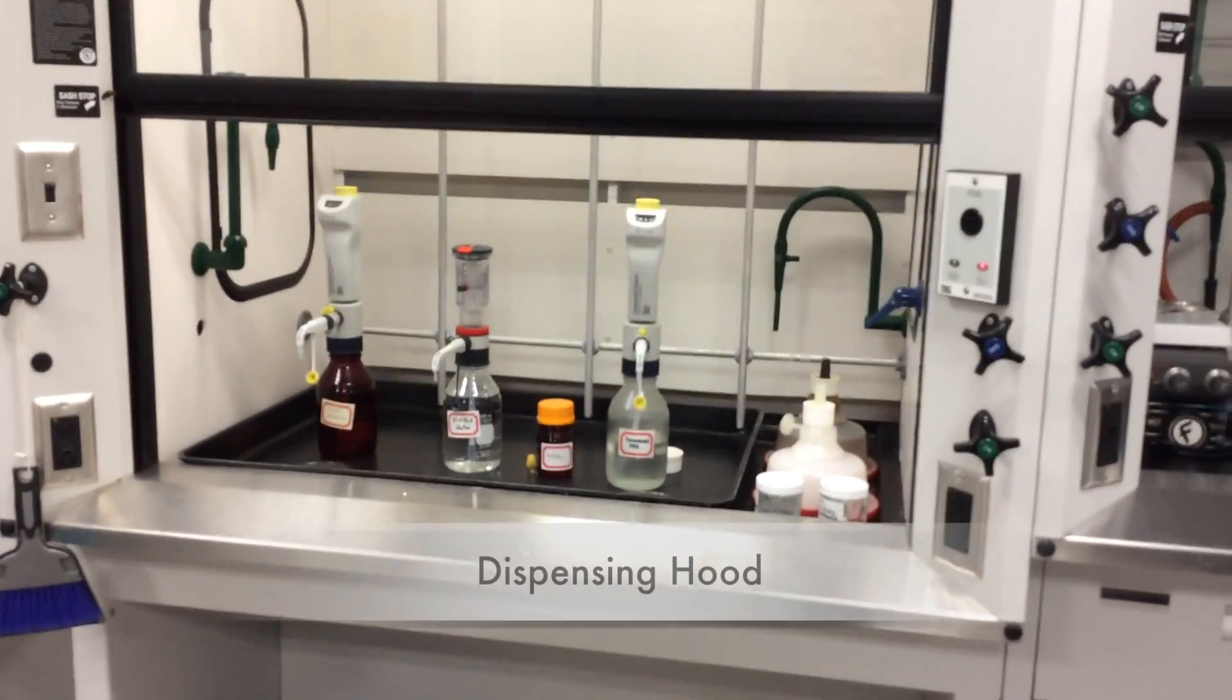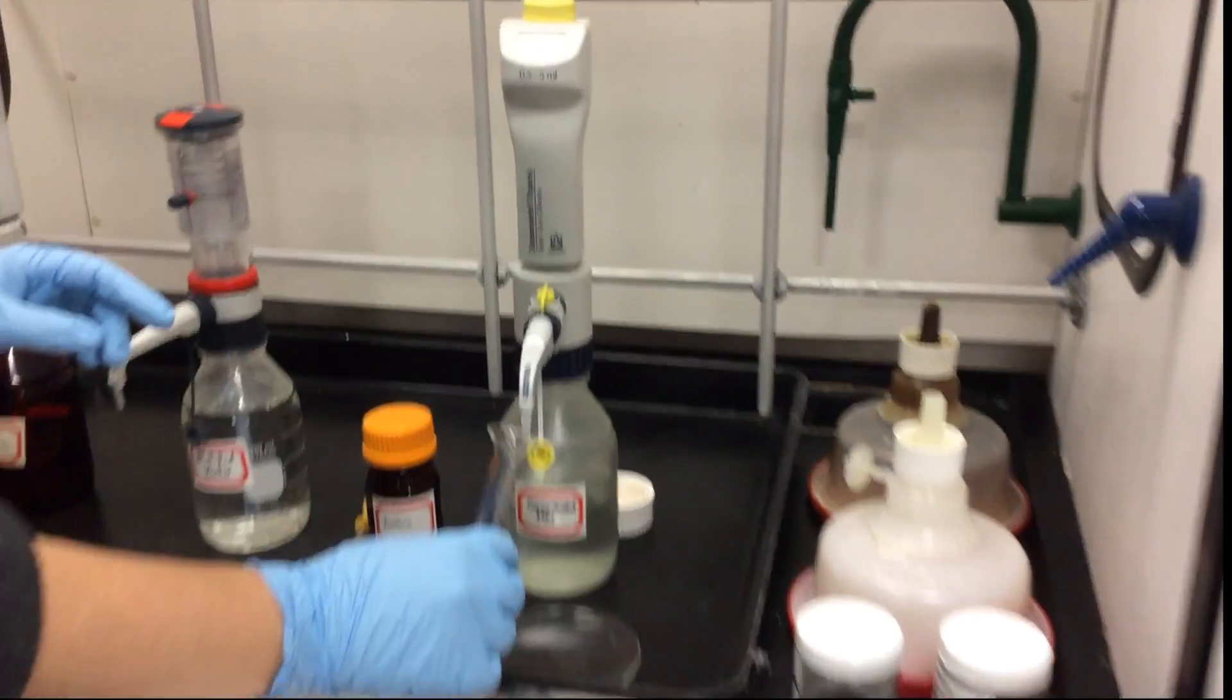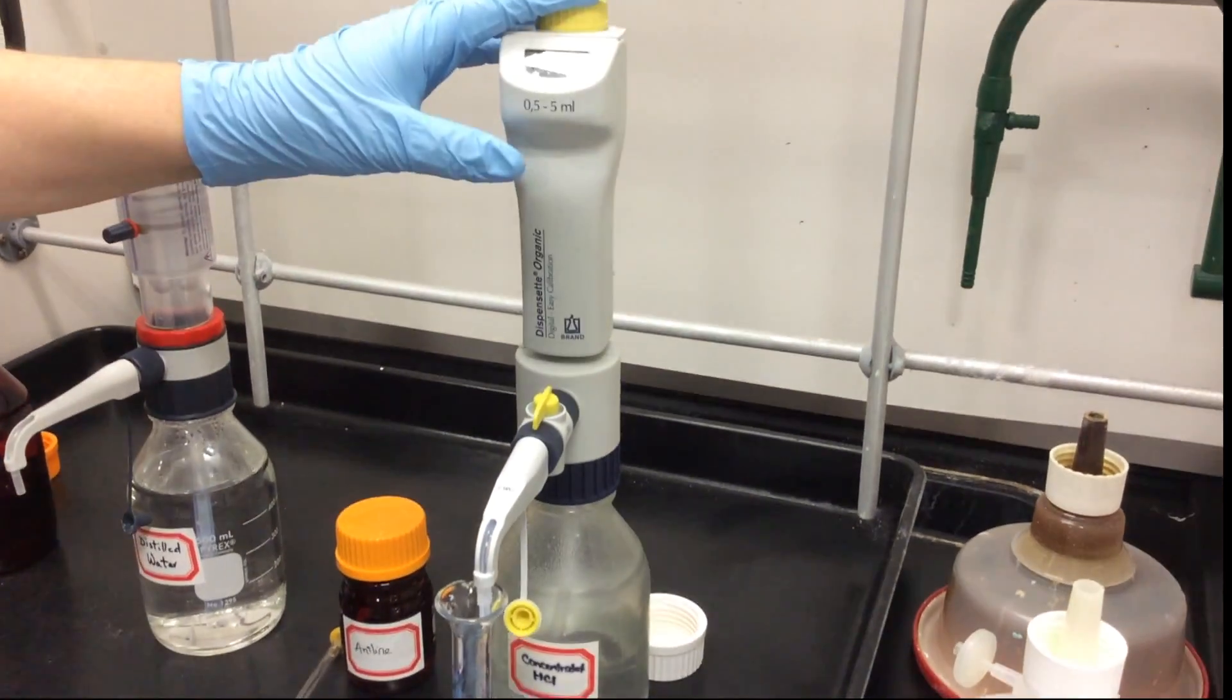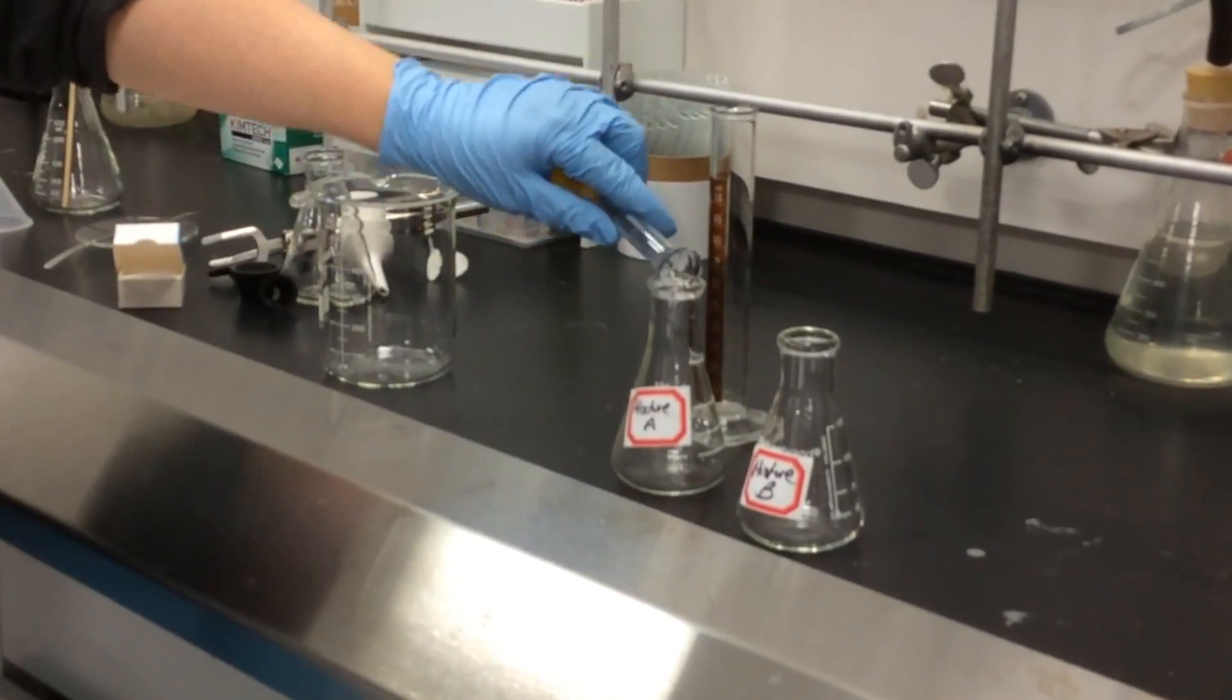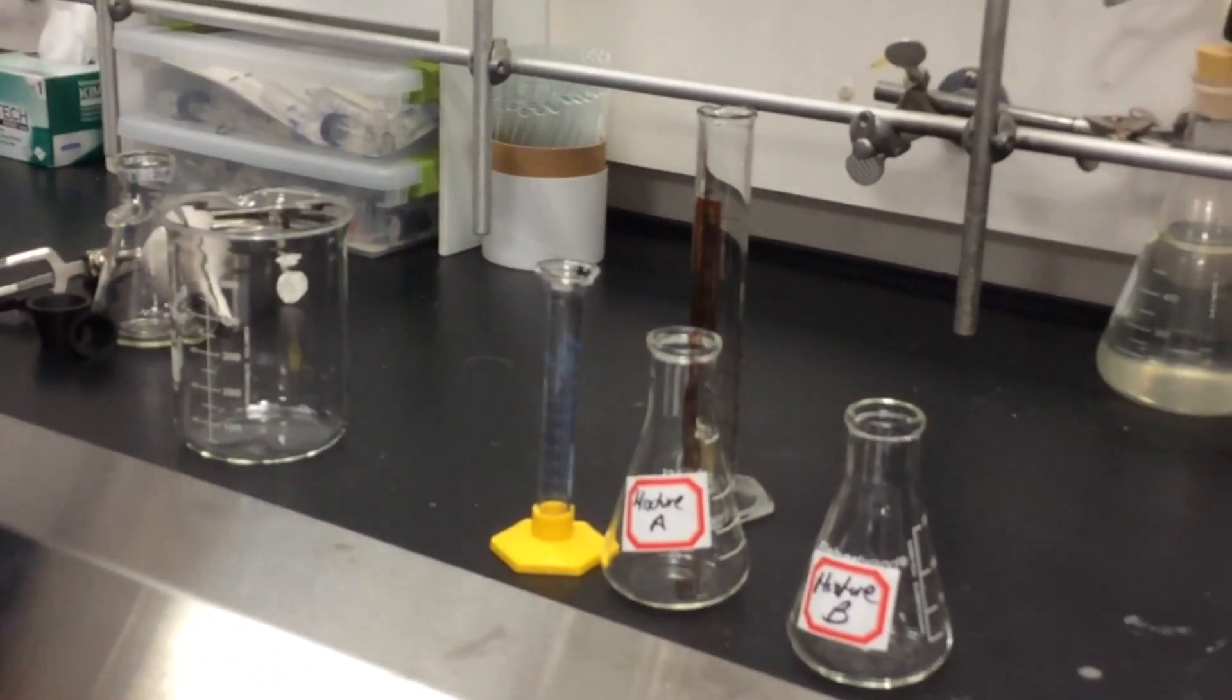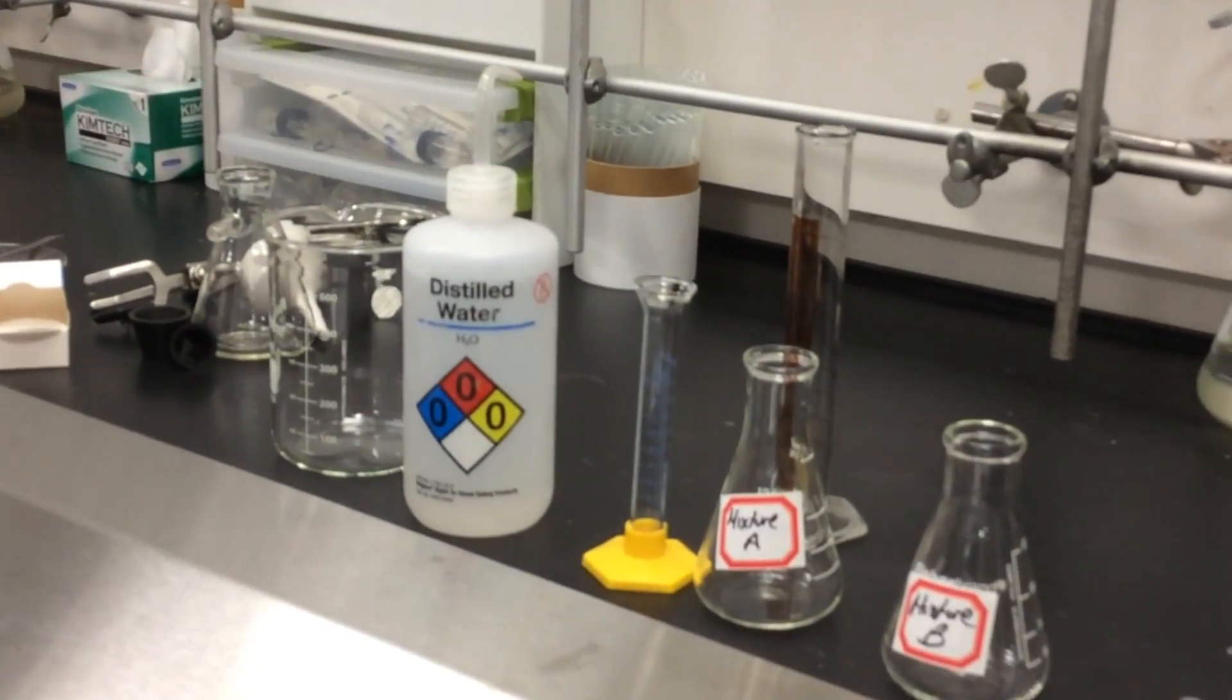This is the dispensing hood. All the liquids will be found here. We're going to take two milliliters of concentrated HCl, just pull the pump up and push it down. Now it's in your graduated cylinder, and then pour it into the 125 milliliter Erlenmeyer labeled mixture A.